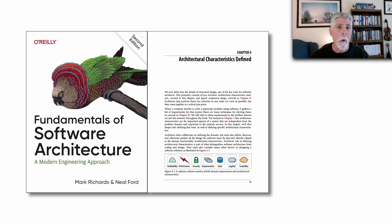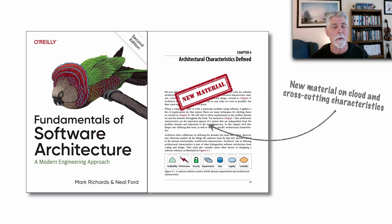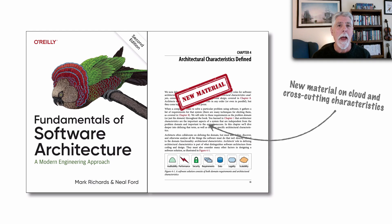Chapter 4 was in our prior book as architecture characteristics defined. Here we added a lot of new material regarding cloud considerations and cross-cutting characteristics, and how these play into our trade-off and decision-making about which characteristics are important for a particular system. We also updated many of the definitions from the first edition on these various architecture characteristics.